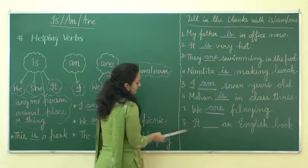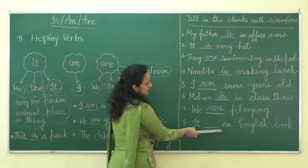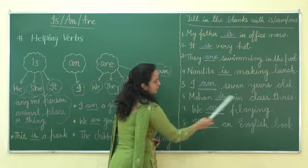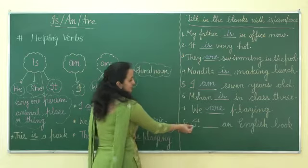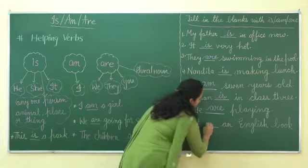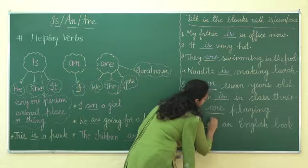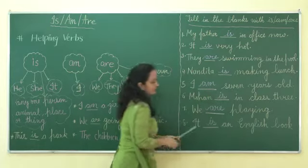Number eight: 'It ___ an English book.' 'It' is a singular pronoun so we can use 'is'. It is an English book.